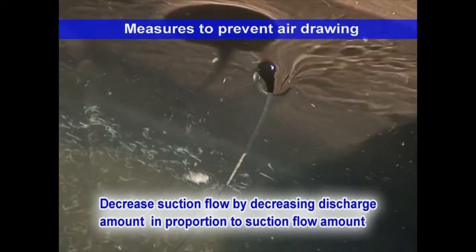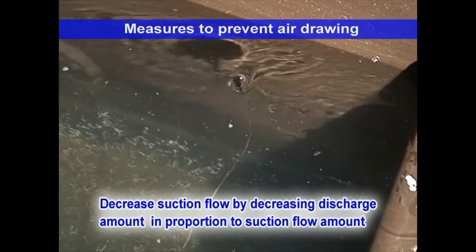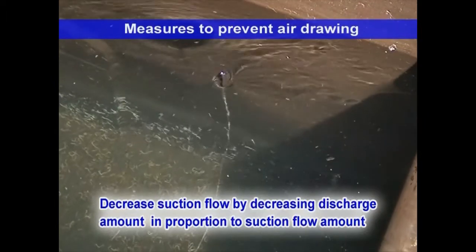To deal with air drawing due to a suction vortex at the bell mouth, decrease the suction flow from the bell mouth by reducing the discharge valve opening to decrease the discharge amount.